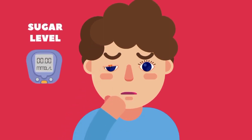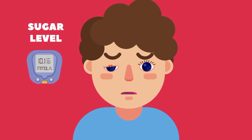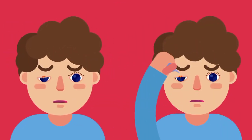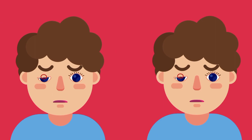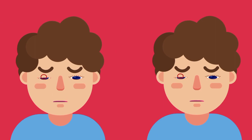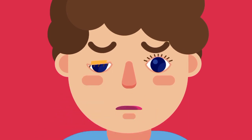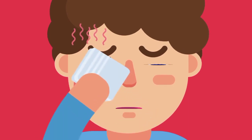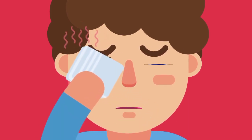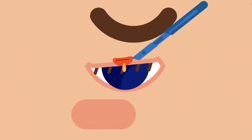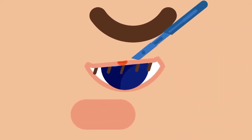Oral antibiotics may be given, especially in diabetic patients and recurrent cases, as oral antibiotics reach the internal eyelid structures more easily than eye drops. Topical antibiotic ointment should be applied to prevent adjacent infection. Treat associated blepharitis if present. Incision and drainage may be required in severe cases.